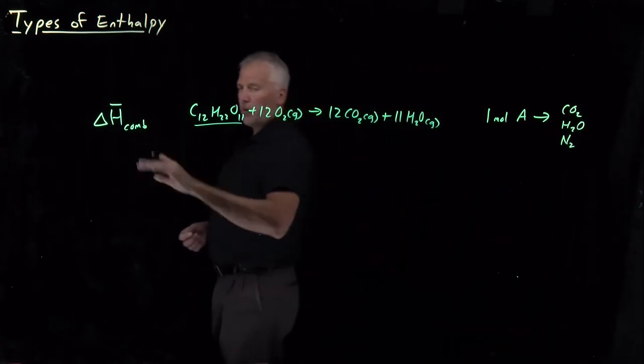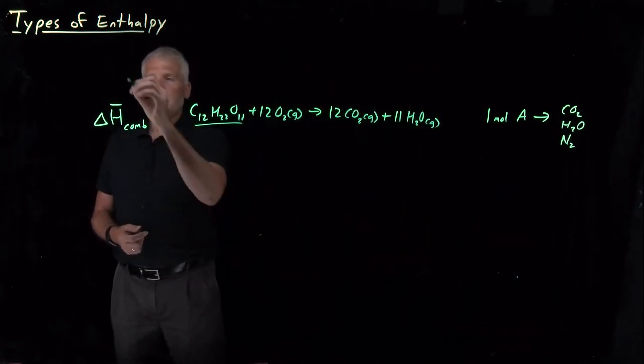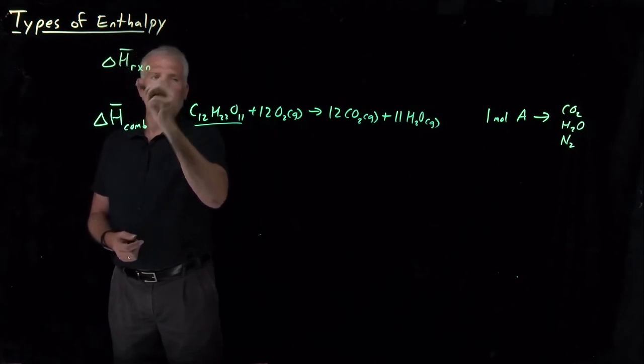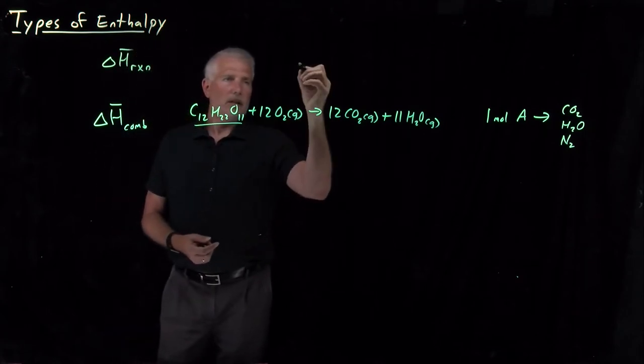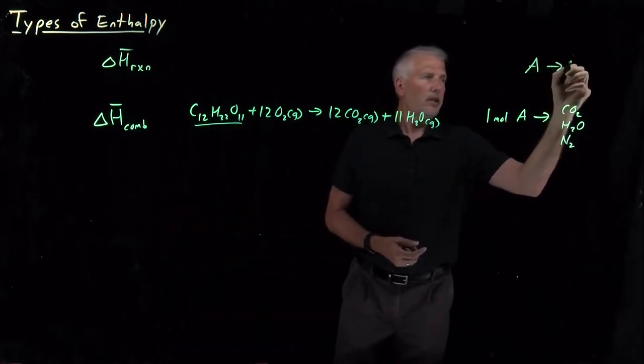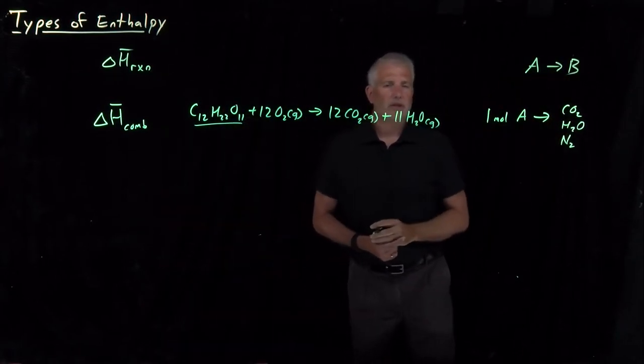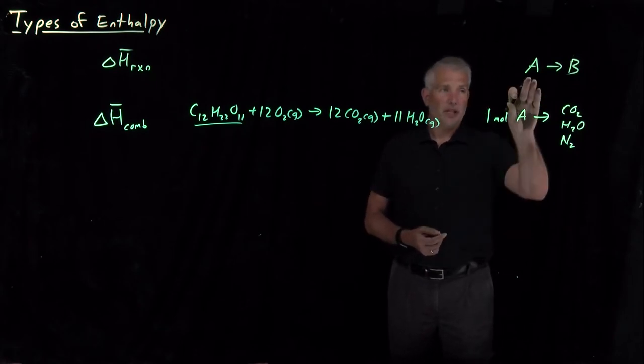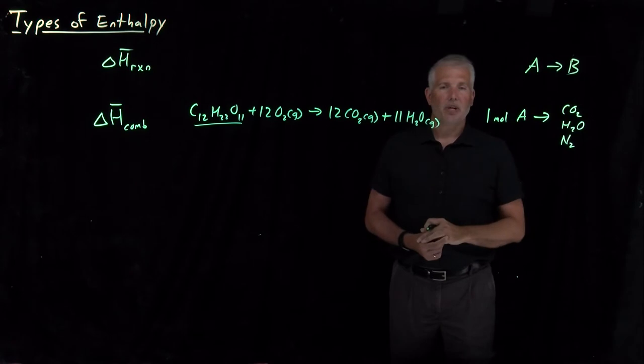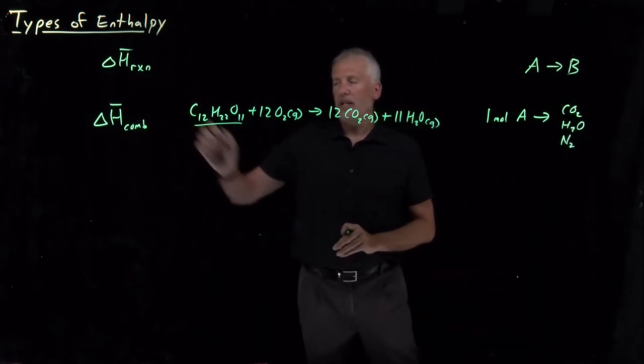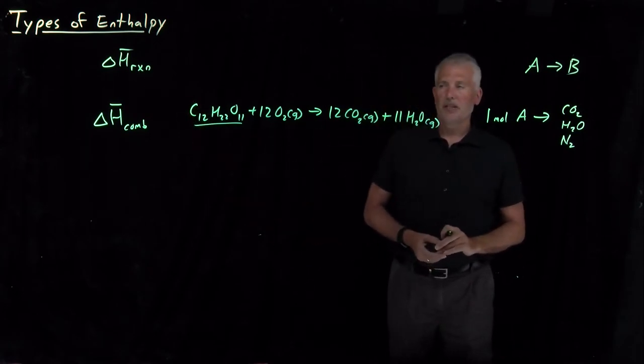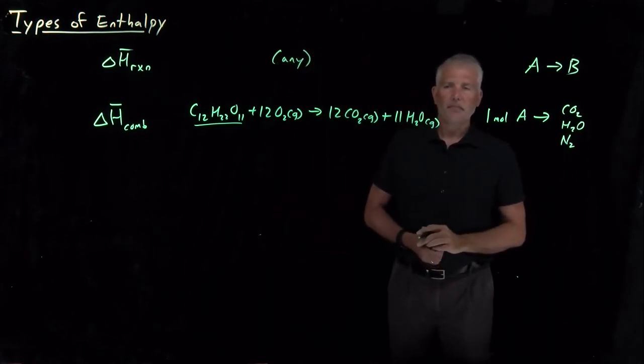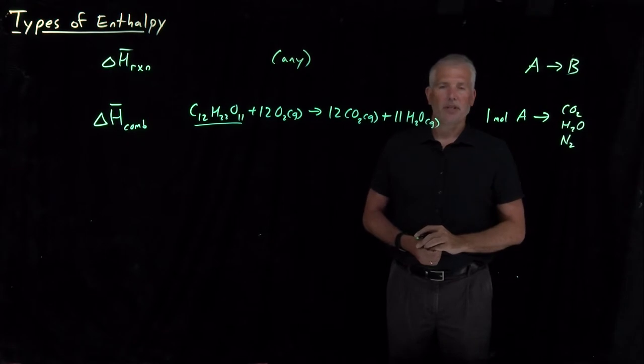There's other types of chemical reactions other than combustion. In general, any reaction that turns reactants into products we can call a chemical reaction. The enthalpy change for that process we can always call delta H of reaction. So any reaction that we can write down, we can label the delta H of that process with the label delta H of reaction.